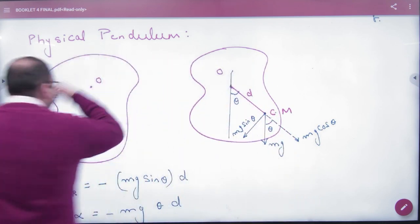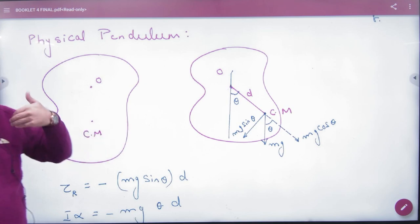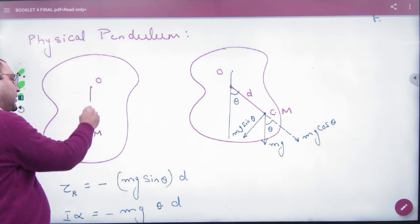Physical pendulum is an arbitrary shape. It's a nail here, it's tangled. So this axis of rotation and the center of mass is this. The center of mass and this point perpendicular distance is D.